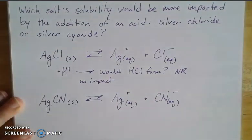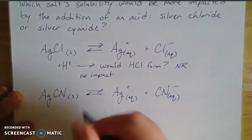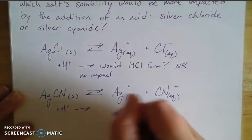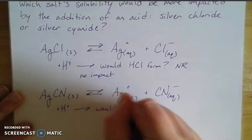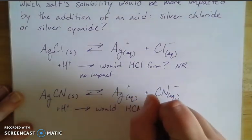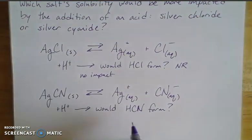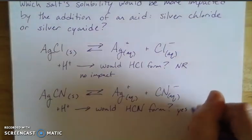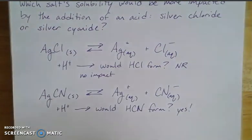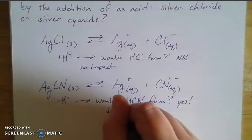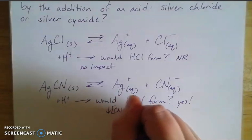Now let's think about our silver cyanide. If we add hydrogen ions to this guy, the question is going to be would hydrogen cyanide form? So based on what we know about strong versus weak acids, we know that hydrogen cyanide is a weak acid. So yes, this would form.